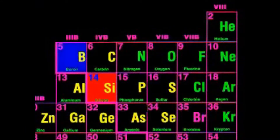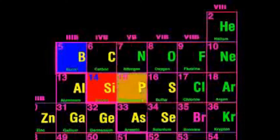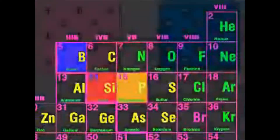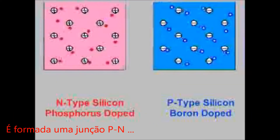For example, when silicon is doped with boron, the resultant material is called p-type. When silicon is doped with phosphorus, the resultant material is called n-type. When pure silicon is doped with both boron and phosphorus in just the right way, a p-n junction is formed.